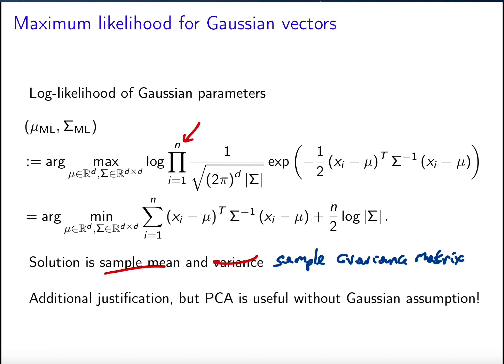Even though PCA can be interpreted as coming from the maximum likelihood estimate for a Gaussian random vector, it is still very useful for non-Gaussian data — as seen with the Canadian cities and face datasets, which are nothing close to Gaussian. In that case, PCA is about capturing variance in different directions rather than modeling the density itself.